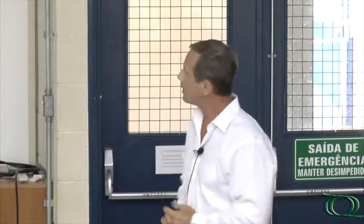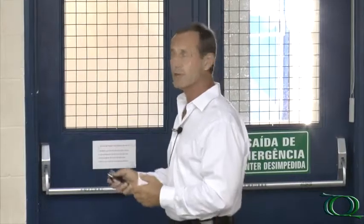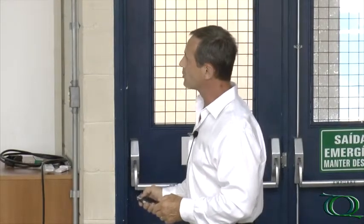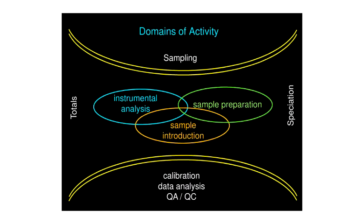This is a basic picture of what spectroscopy is in terms of the domains of activities that there are, and this is not peculiar to inorganic — of course, we can have the same kind of diagram for organic. I presented these three principal domains in the form of a Venn diagram because there is an overlap in the activity: instrumental analysis, sample preparation, and sample introduction. If you have a particular instrument in your laboratory, this may dictate a particular form of sample introduction, and that will mean you may have to undertake a particular form of sample preparation.